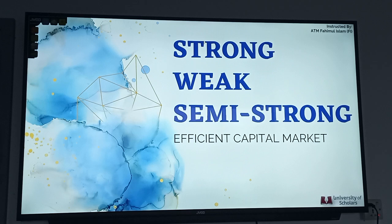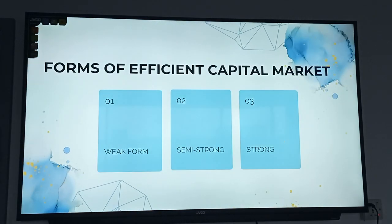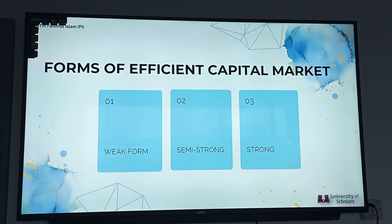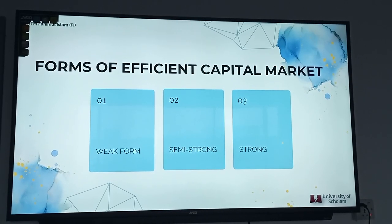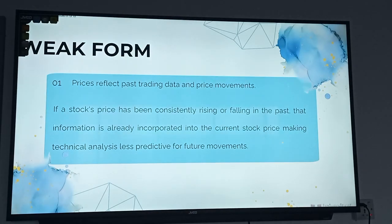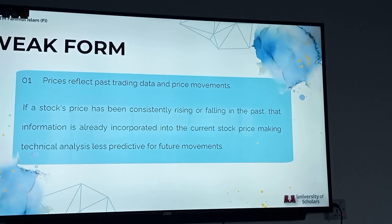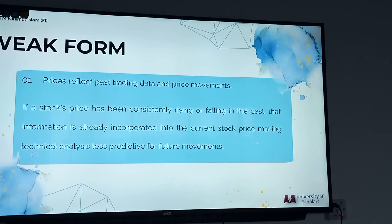We will learn about the three forms of capital markets, starting with the weak form of efficient capital market. In a weak form of efficient capital market, the prices of securities fully reflect all past trading data and price movements. This means if a stock's price has been consistently rising or falling in the past, that information is already incorporated into the current stock price. As a result, using technical analysis — which involves studying historical price patterns and trends — does not give investors an advantage in predicting future price movements.